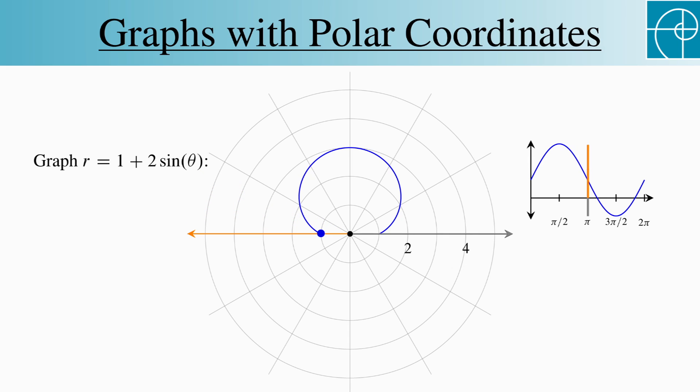Between pi and 3pi over 2, r decreases from 1 to negative 1, which means that it passes through the origin at an angle like this. And then continues, remember that r is now negative, in the direction opposite to the direction of the angle.